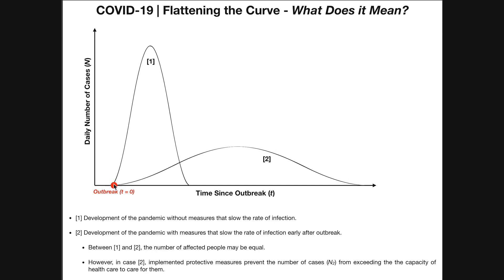Curve number two has the same onset time, but this one doesn't go up nearly as quickly, and then it also doesn't go down nearly as quickly. Notice that the peak of curve number two is well beneath the peak of curve number one.